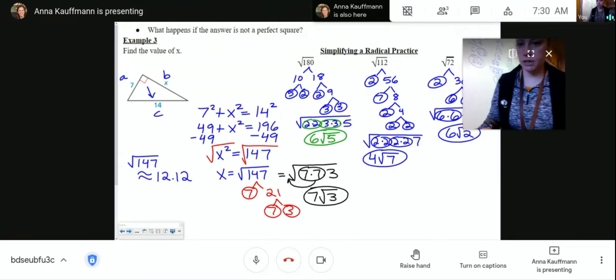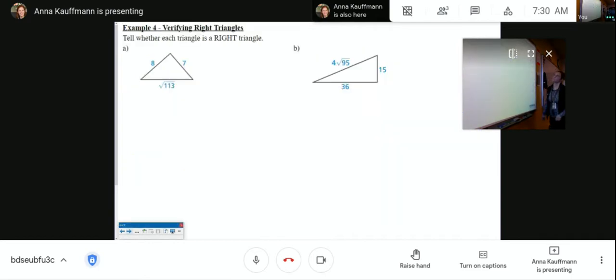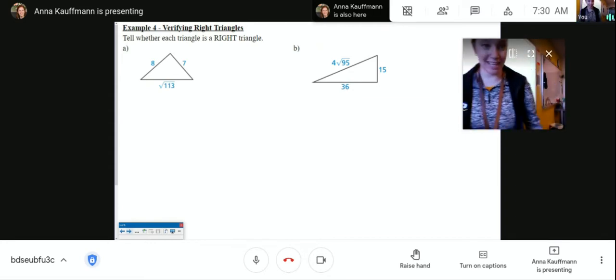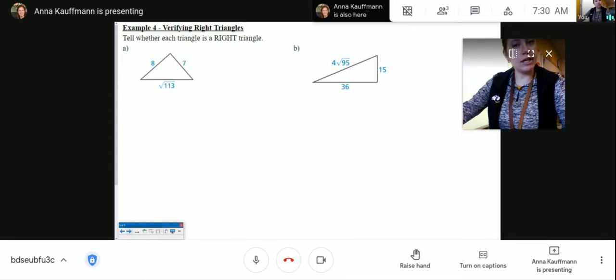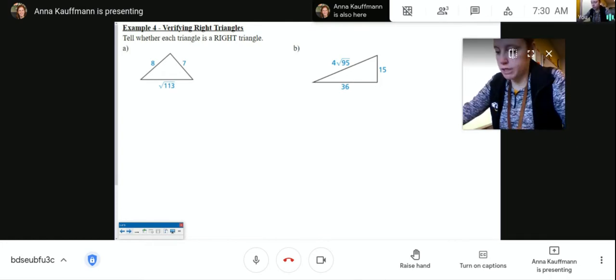Four root seven and six root two. All right, example number four, verifying that a triangle is right. So if you take a look at these two triangles, there is not a 90 degree angle in the corner, but you can take a guess as to where you might think the right angle is supposed to go. You can kind of see it. And we're going to check and see if these are right triangles using the Pythagorean Theorem. If the Pythagorean Theorem is true, then yes, it is a right triangle. So we're going to test it.